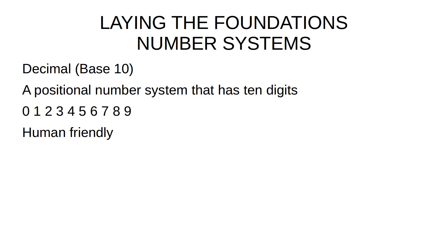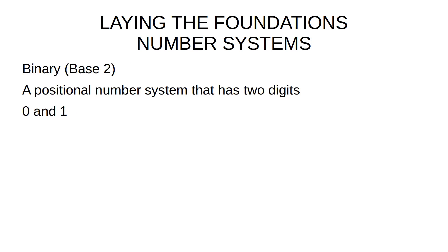Why do we use this decimal number system? It's very human-friendly — quite obviously, we actually have ten digits: eight fingers and two thumbs. Now computers don't have hands. What a computer uses is hundreds of millions, if not billions, of little tiny electronic switches known as transistors.